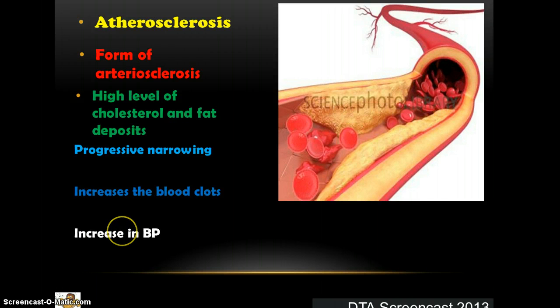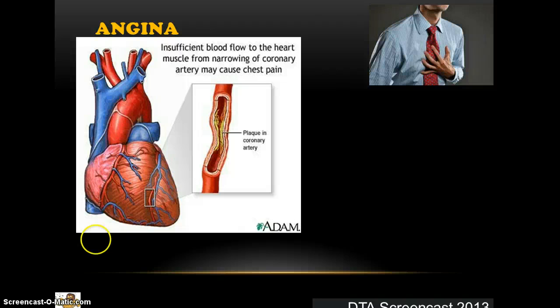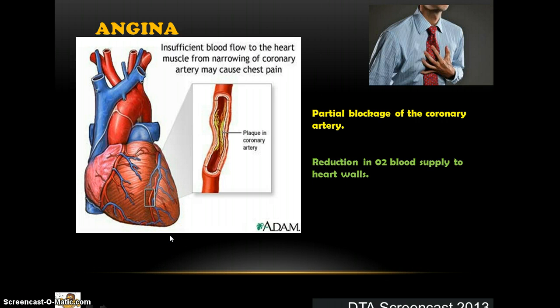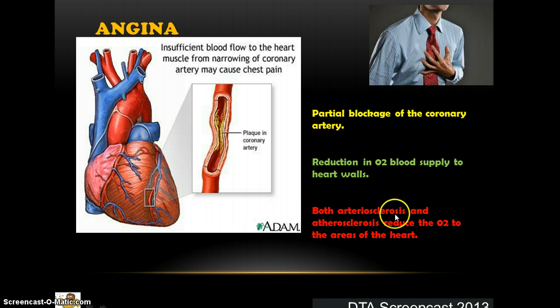This increase in blood pressure is called hypertension and can have significant knock-on effects. The third disease is angina. A common symptom is chest pain and clutching of the chest, caused by a partial blockage to the blood feeding the heart walls. This is usually arteriosclerosis or atherosclerosis causing the narrowing of the arteries leading to the heart walls, therefore reducing the amount of O2 — these two are very important to remember when talking about angina.